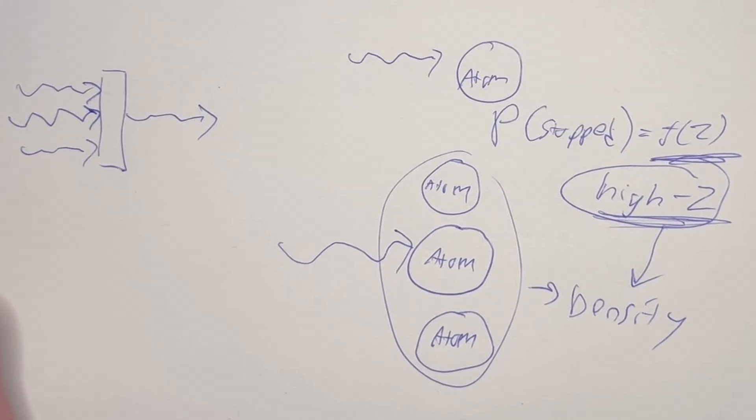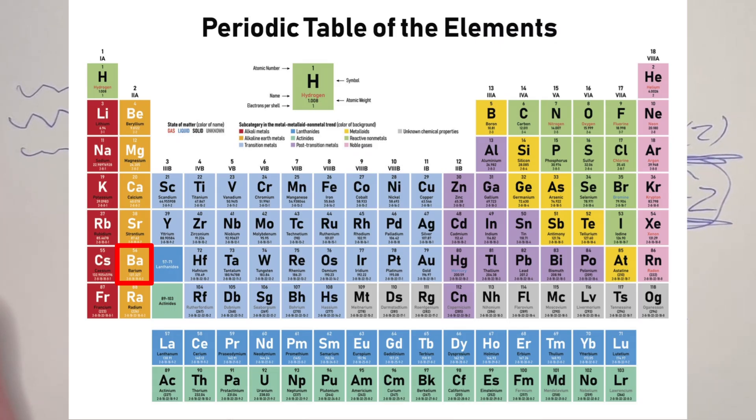The reason barium sulfate is good radiation shielding is barium is a very high atomic number. Tungsten is also quite good. Bismuth is another good one. You've probably seen lead radiation shielding. Lead also has a very high atomic number.